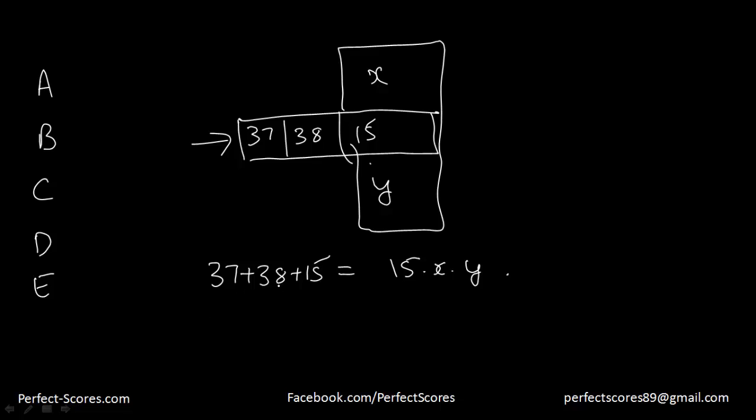So what is 37 plus 38 plus 15? So if you add this up, this comes down to 90. That is equal to 15 into x into y, which means x into y is equal to 6.